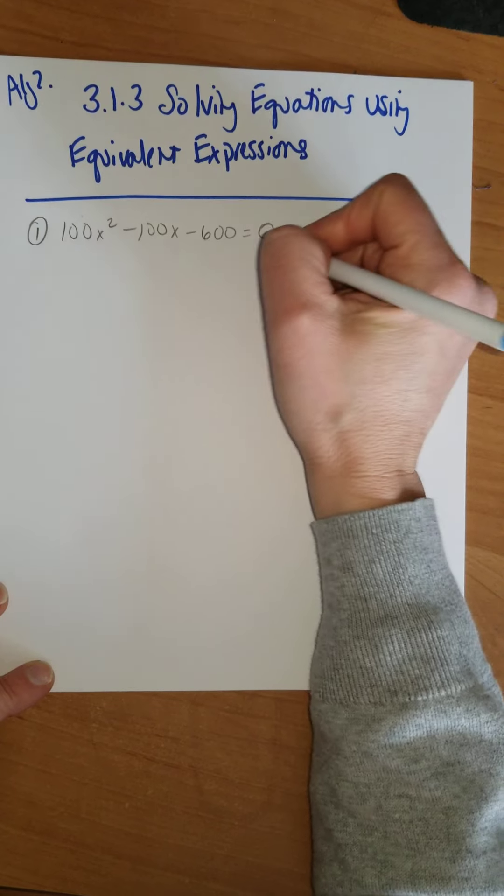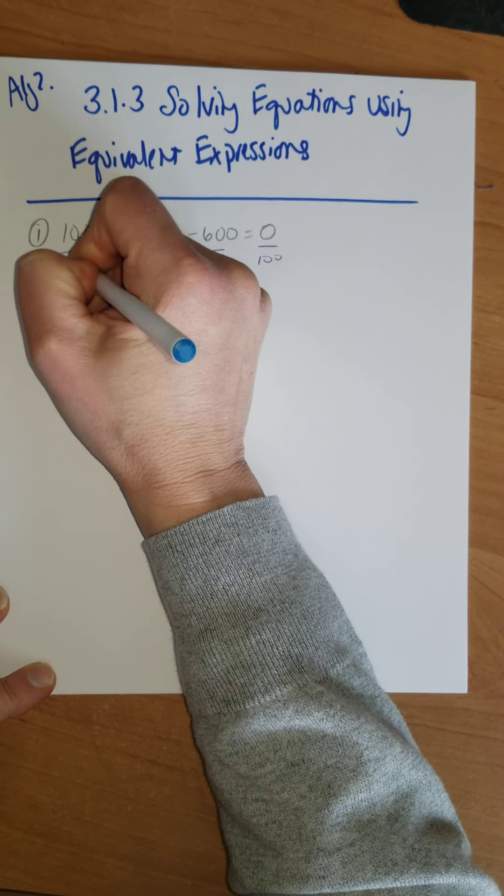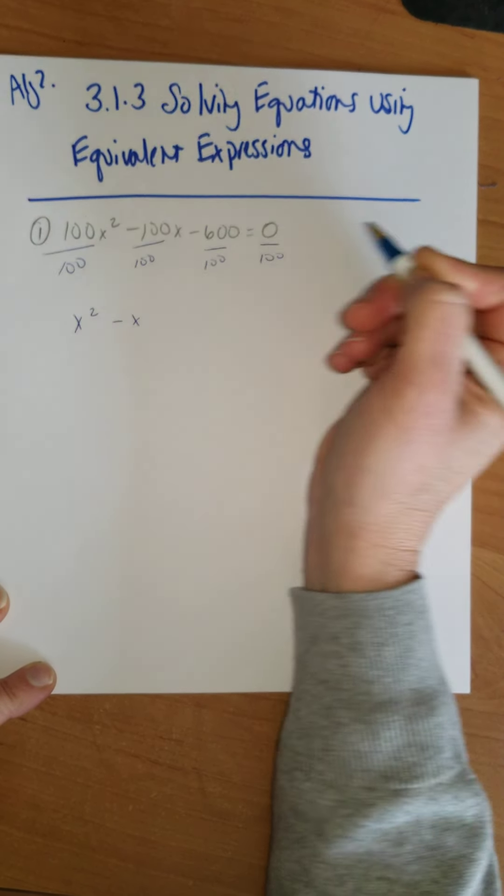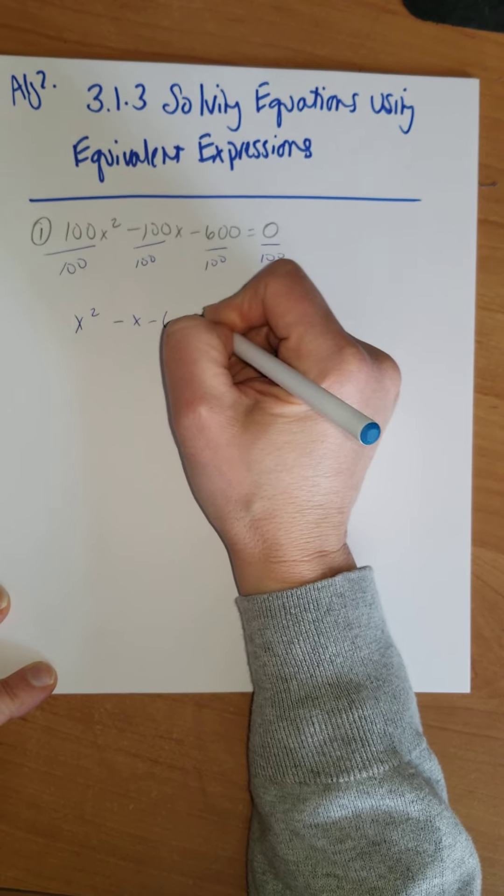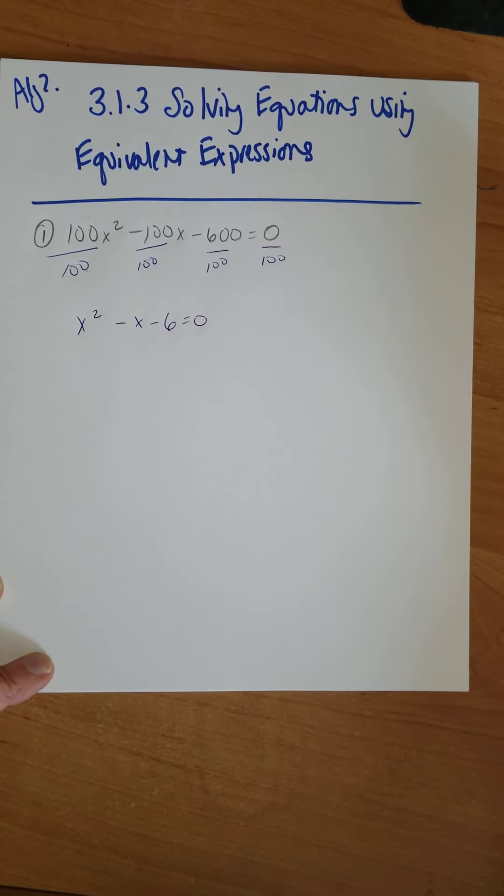Well, I see all these zeros, and if I would divide everything by 100, 100 divided by 100, this would be x², and this would be minus an x, and that would be minus 6, and that equals 0. So then the question is, how do I solve this?